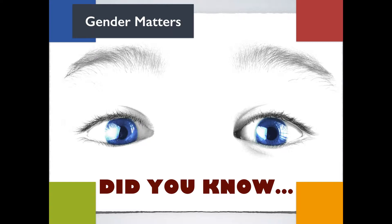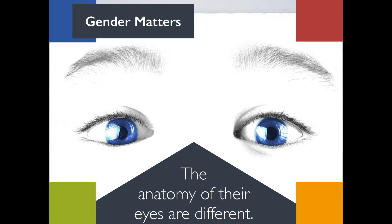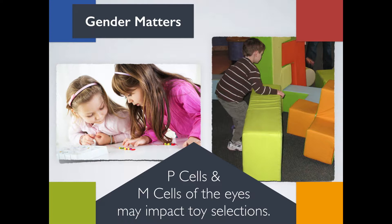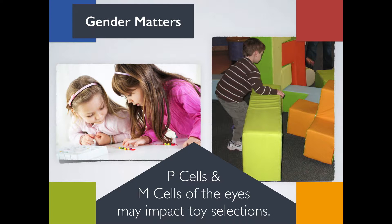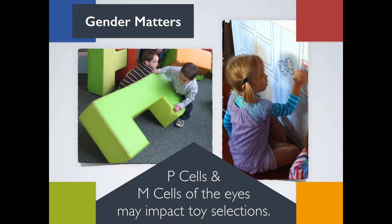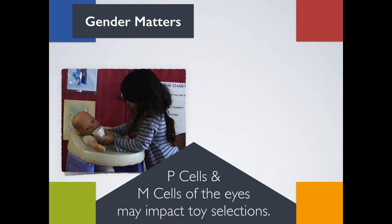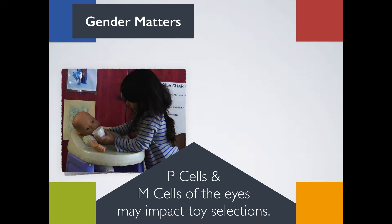Another physical distinction between girls and boys is the anatomy of the eye. Girls have more P cells, which process color and texture, while boys have more M cells, which process location, direction, and speed. You may think of girls who enjoy art activities and are more detailed in their creations, or boys who squirm, kick, and wiggle more. These physical differences also impact toy selection and what boys and girls consider fun and interesting.